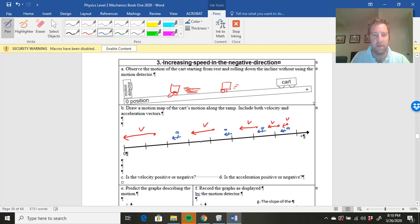Is the velocity positive or negative? Here's my zero mark. This is the direction that's the positive direction. My velocity is going the other way. So my velocity is negative.